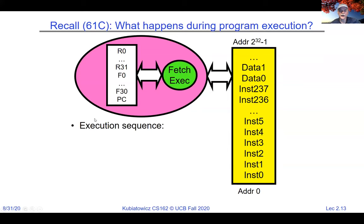Imagine the magenta thread decides to compute the last digit of pi — it never gives up the CPU, locks out timer interrupts, and now blue and yellow never run. That's a system we do not want. I worked on Windows 3.1 systems where a bad application would lock everything up. The OS must protect itself from user programs for reliability, security, privacy — limiting each thread to the data it's supposed to access — and fairness, preventing one thread from monopolizing the CPU.